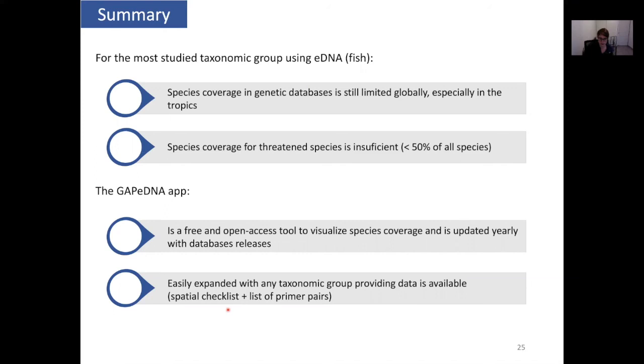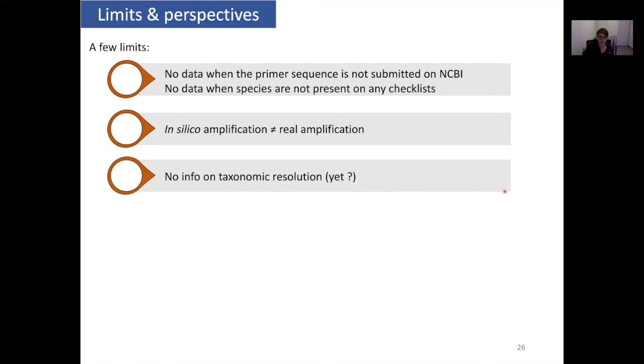A few limits I can cite: there's no data if the primer sequence is not submitted on NCBI. If you design a reference database and submit the sequence but don't submit the primer sequence, it's not possible to extract it using in silico PCR automatically. There's also no data if the species is not present on any checklist, because if it's too rare or unknown, there's no way to know where it lives. In silico amplifications also do not mean it could be amplified in a real life sample. That has a link with primer design and is out of scope for this work. There's also no information on the taxonomic resolution of primer pairs, but that's something that's interesting and also a problem for DNA-based inventories. That's something I consider adding in the future maybe to the app.